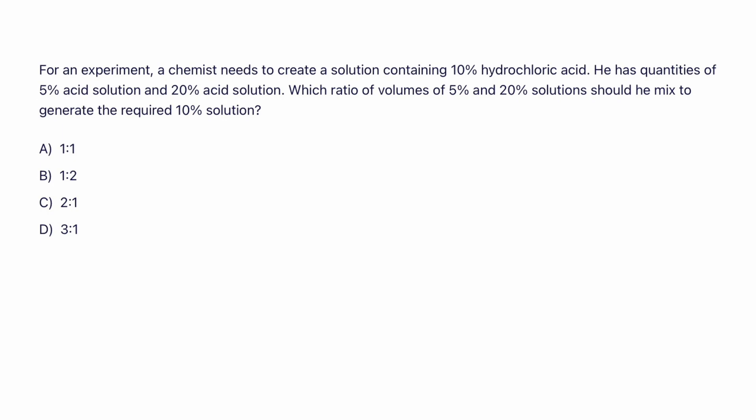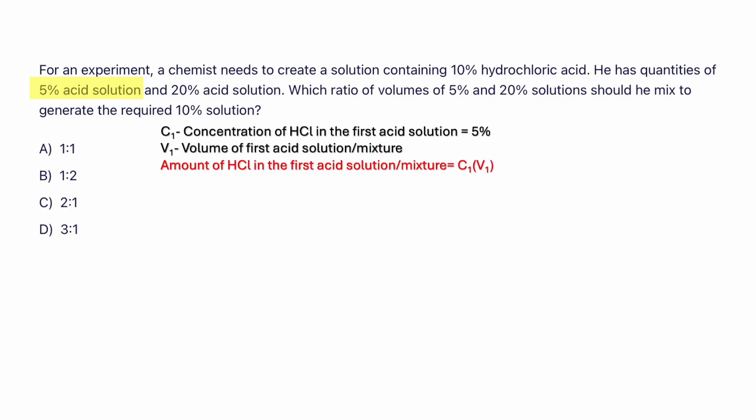They've given us some percentages, but they've not given us the volume, and we are asked to find the ratio of volumes. Let's start by labeling what is given. They've given a 5% acid solution. Let's say C1 is the concentration of hydrochloric acid in the first solution, which is 5%. We don't know the volume, so V1 would be the volume of the first acid solution. To find the amount of hydrochloric acid in the first solution, just multiply the percentage by volume: C1 times V1.